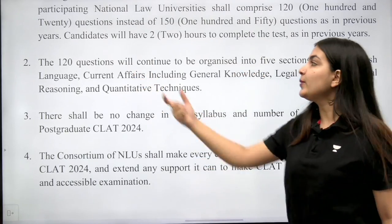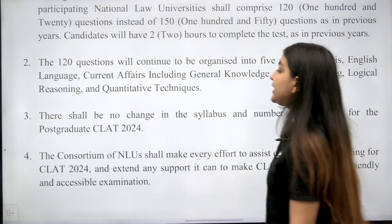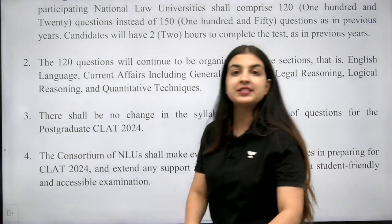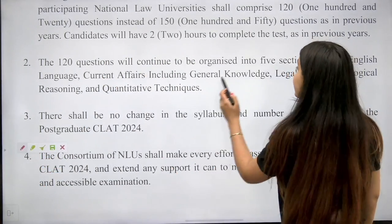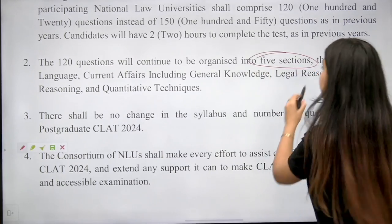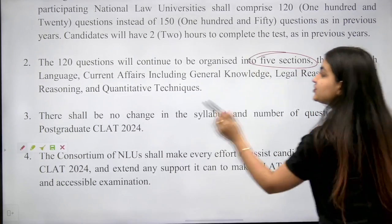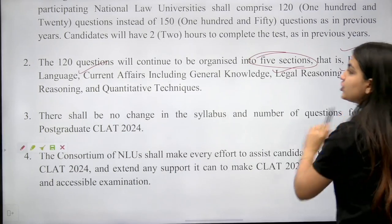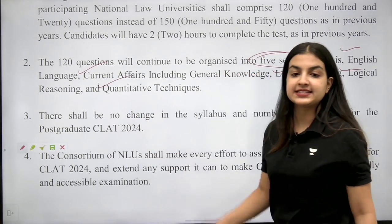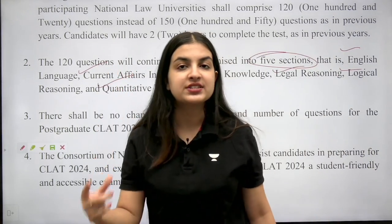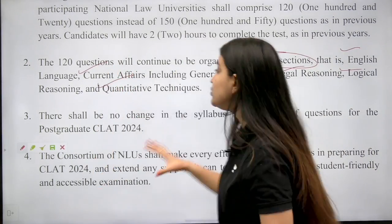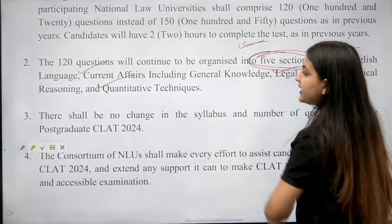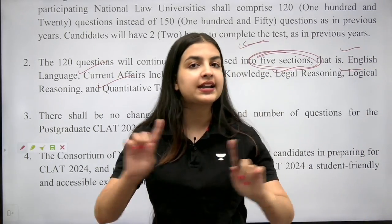These 120 questions will continue to be organized in 5 sections, so no section is going to be removed. The five sections remain: English Language, Current Affairs and GK, Legal Reasoning, Logical Reasoning, and Quantitative Techniques. Only the number of questions has been reduced; all five sections remain intact and no particular section is going to be removed.